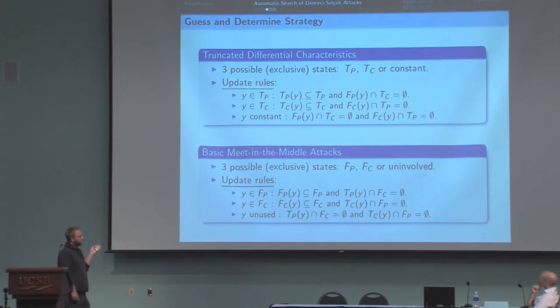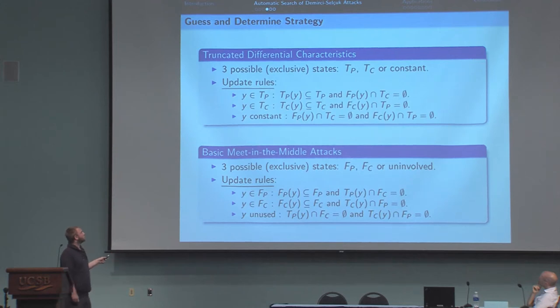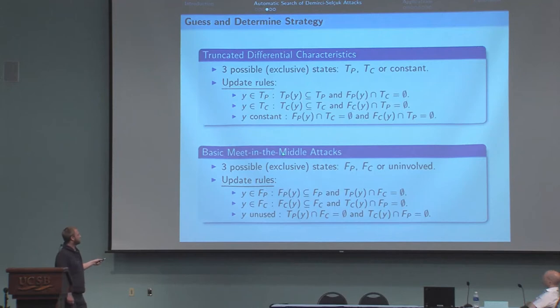For instance, for AES, searching for truncated characteristics is similar to searching for meet-in-the-middle attacks. It's not similar, it's exactly the same.